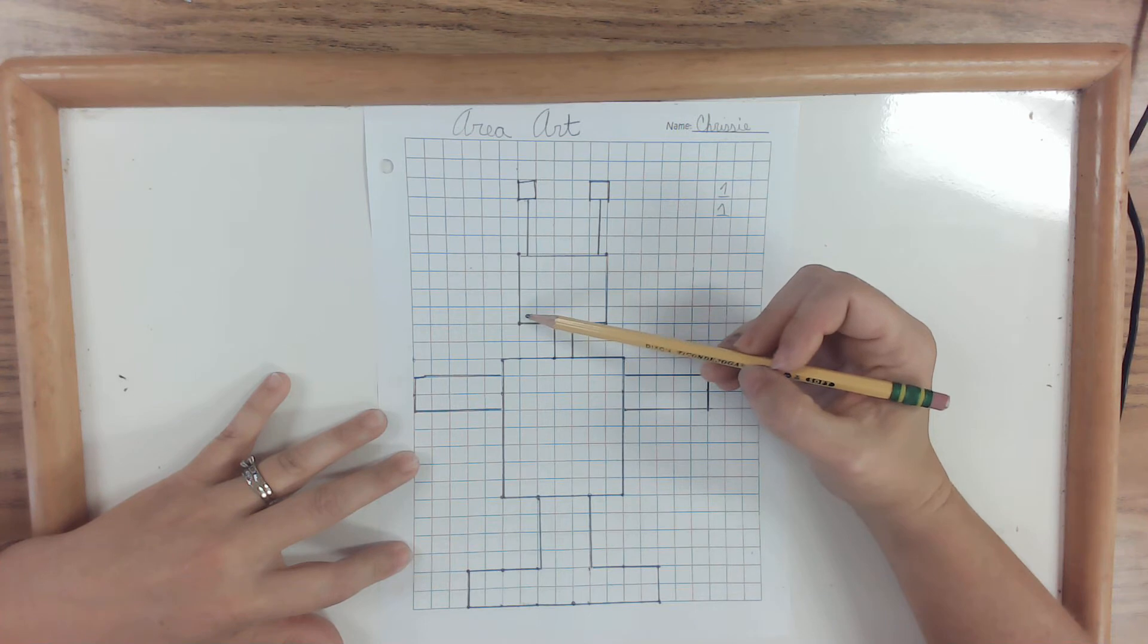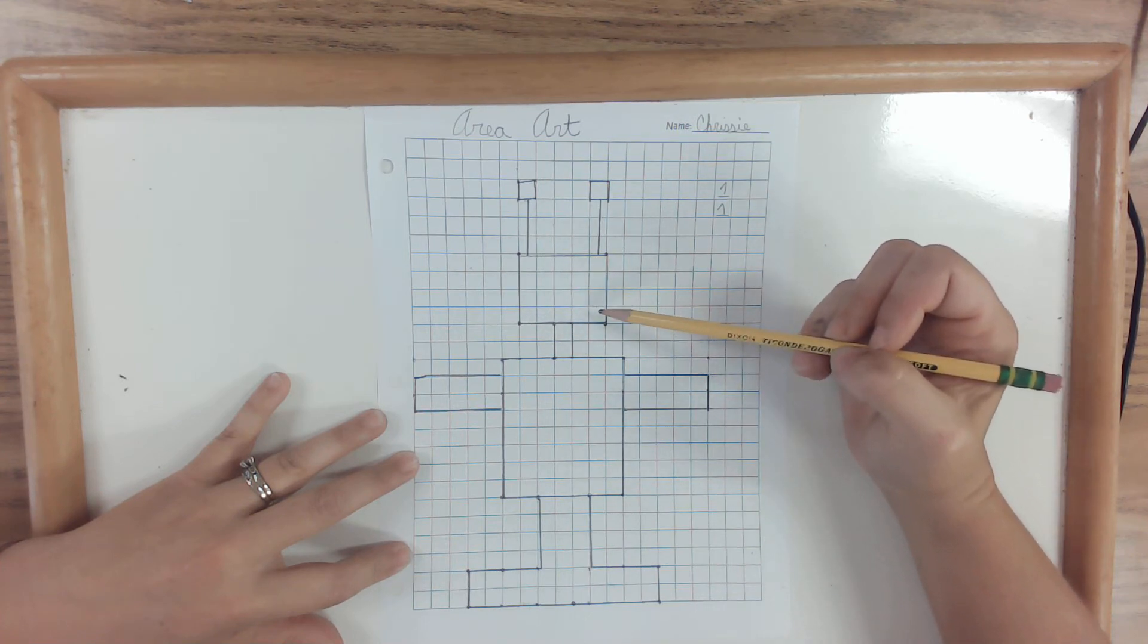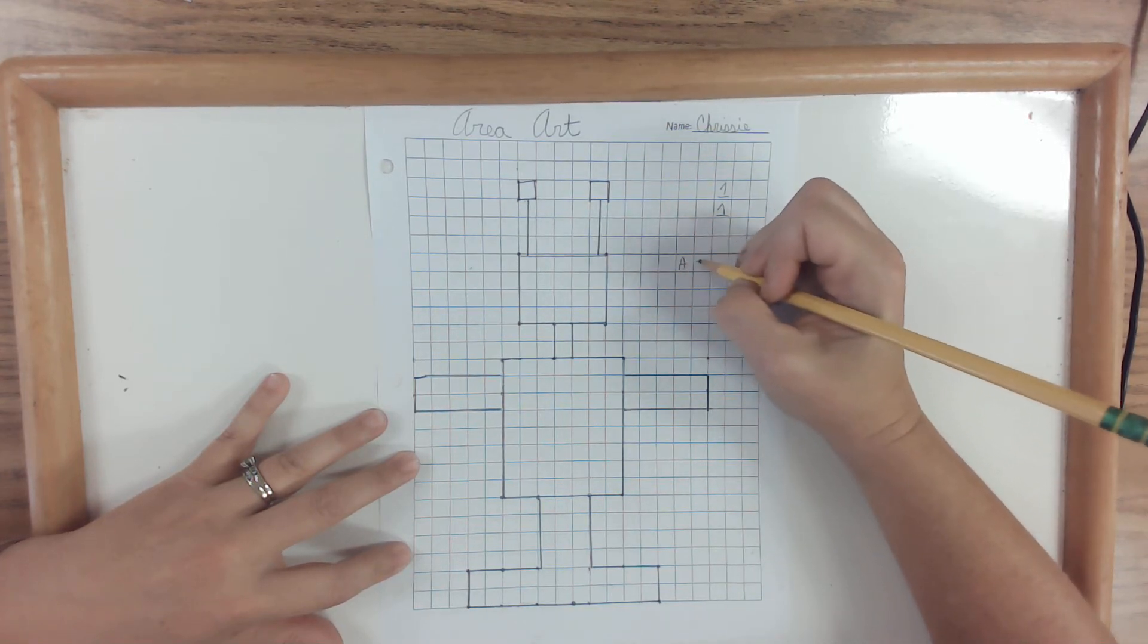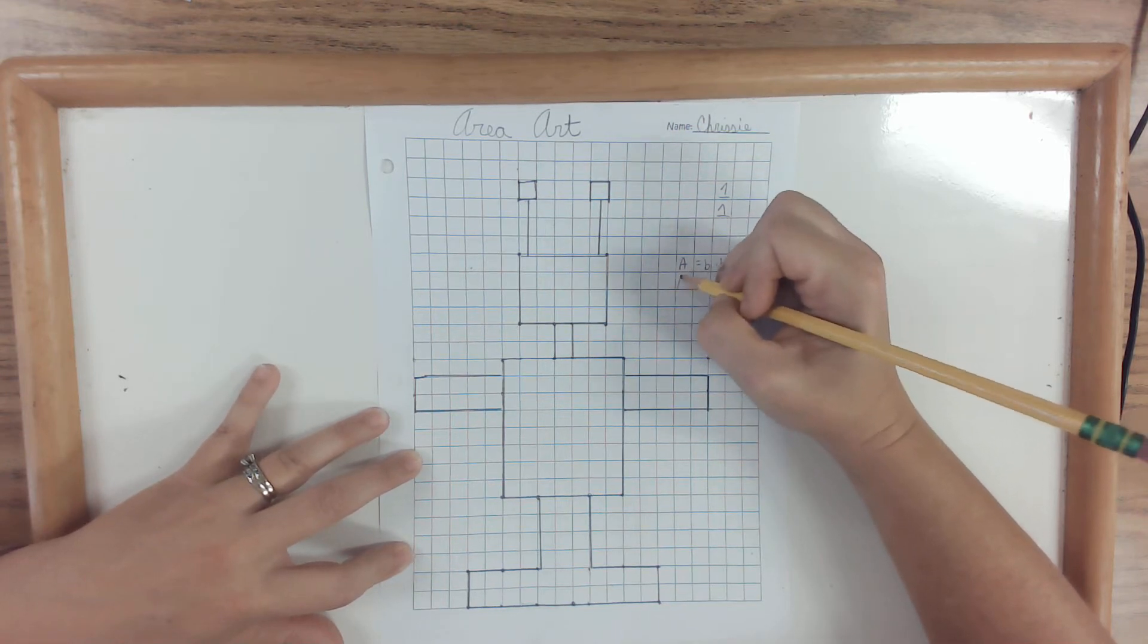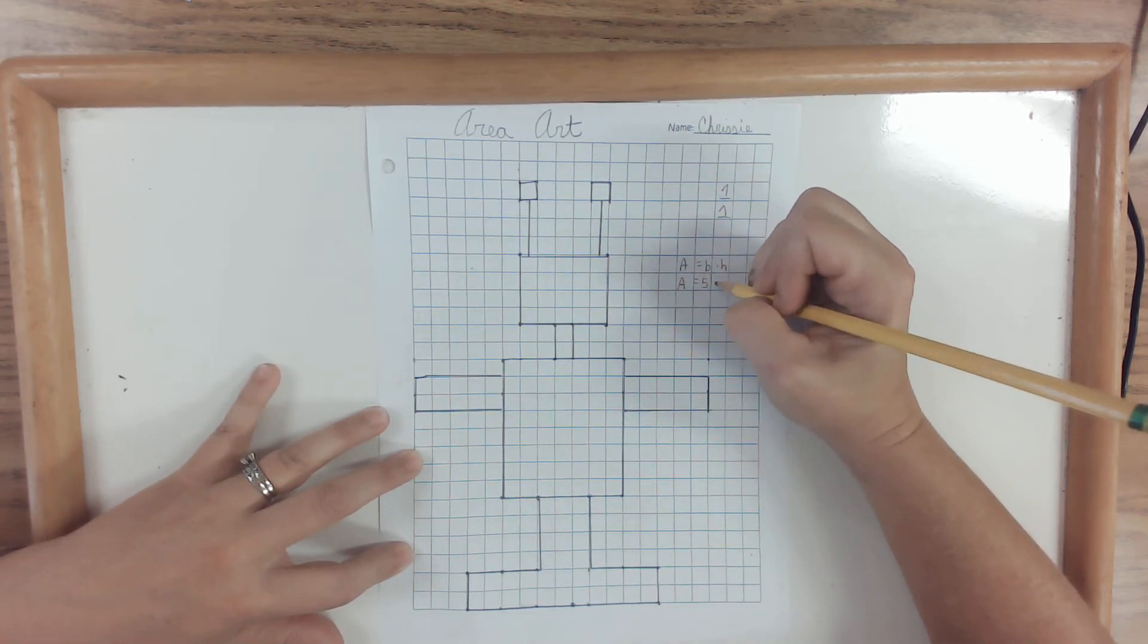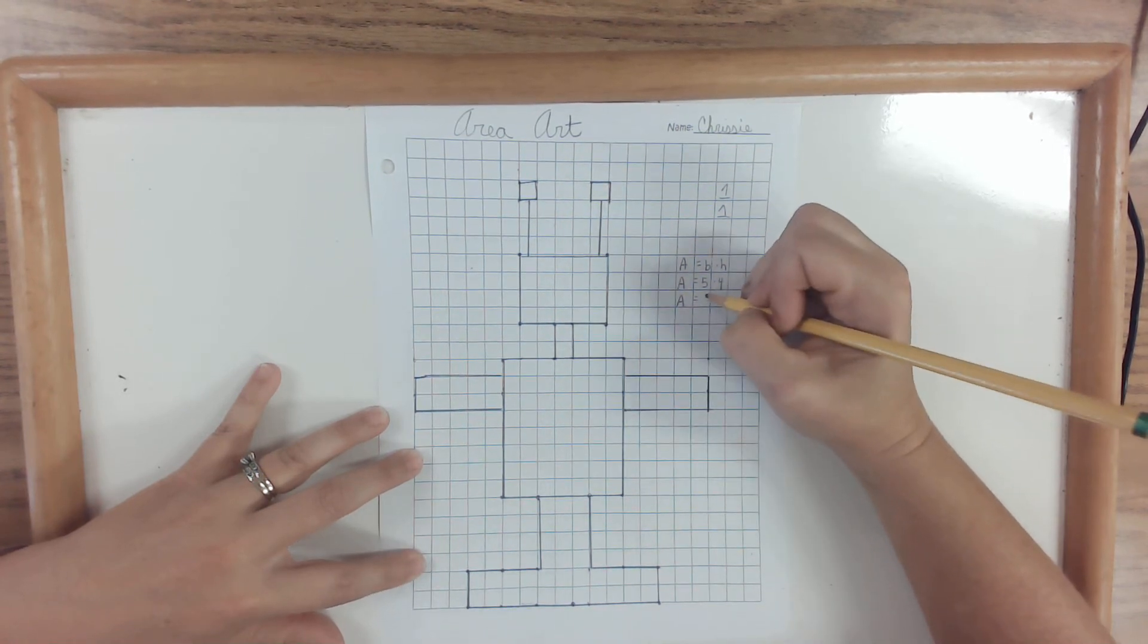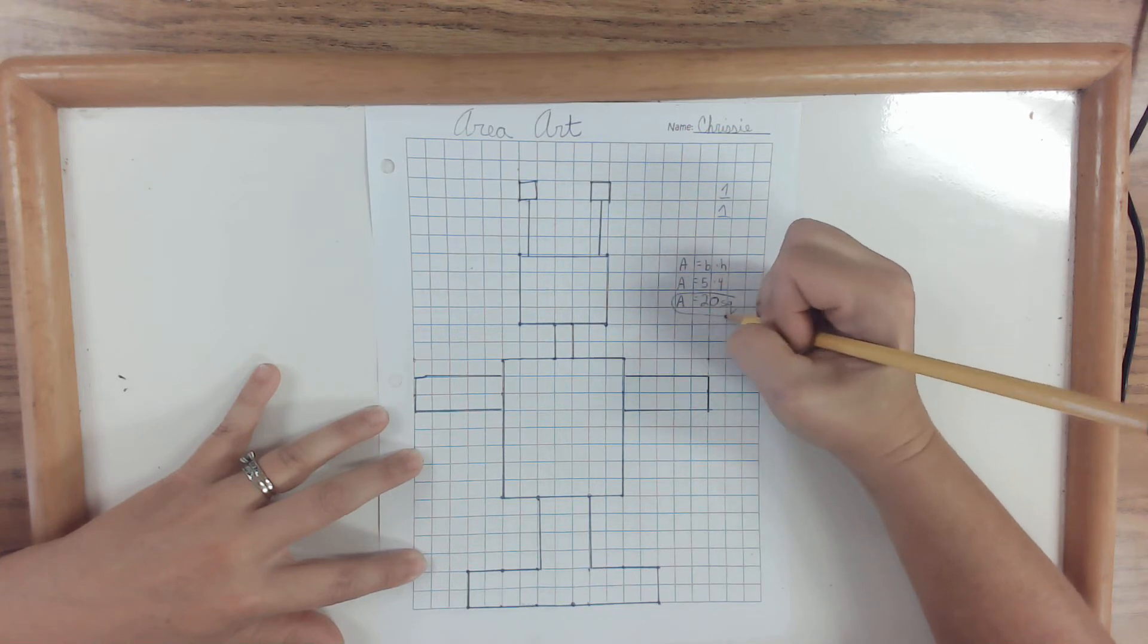Now, I see that this one has a base of one, two, three, four, five. And a height of one, two, three, four. So area equals base times height. Area equals five times four. Area equals twenty squares. And I circle that.